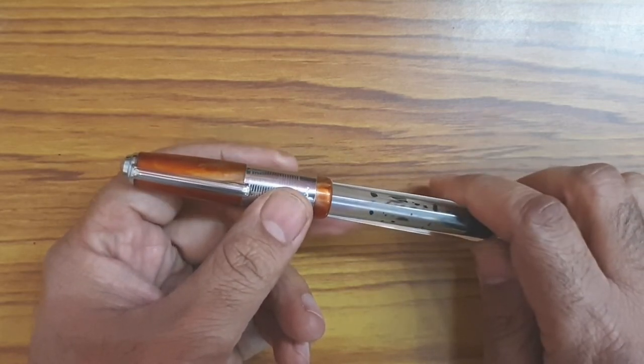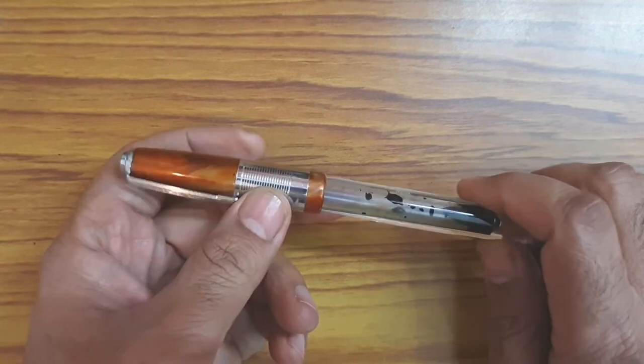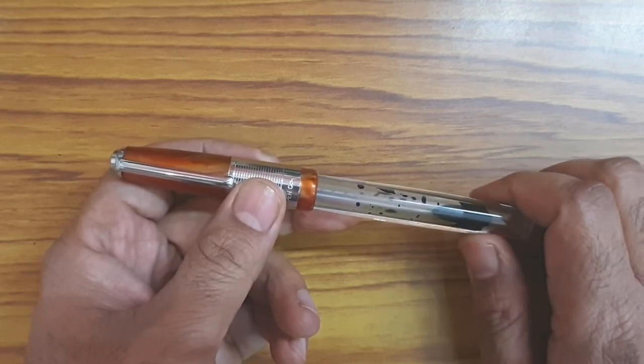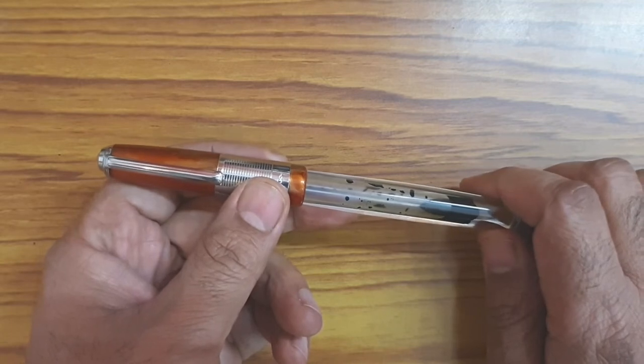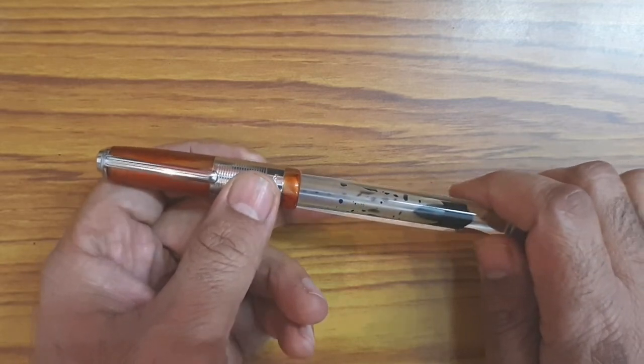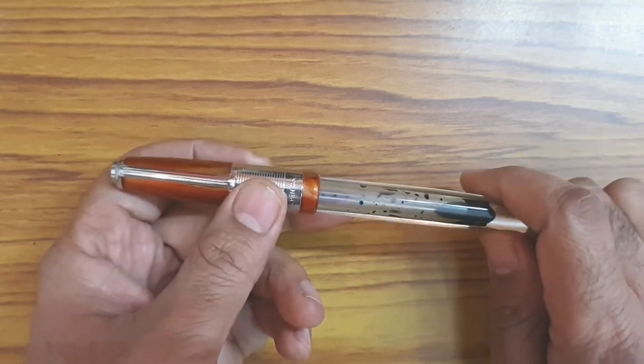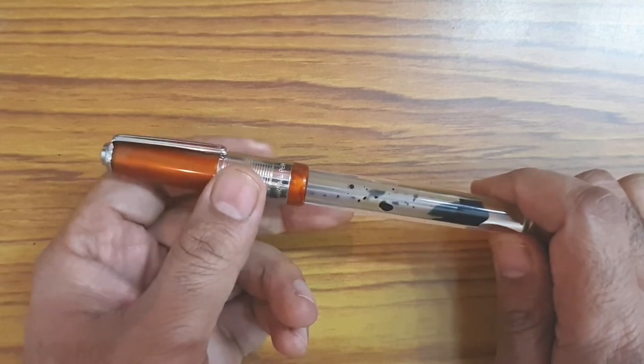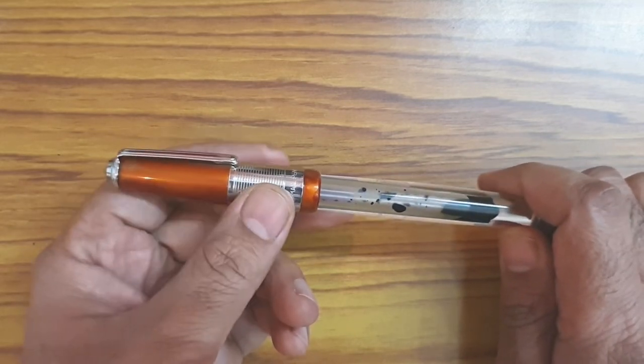Airmail pen is labeled 71JT. This model is 71JT because of the jumbo size J and transparent model demonstrator T. Mind you this is an eyedropper pen only. The pen is made up of clear acrylic, plastic cap and plastic section.